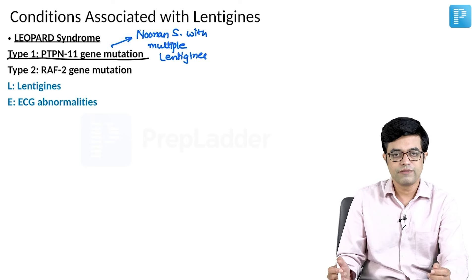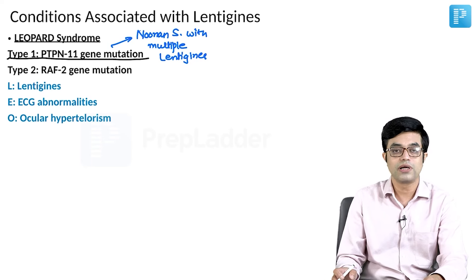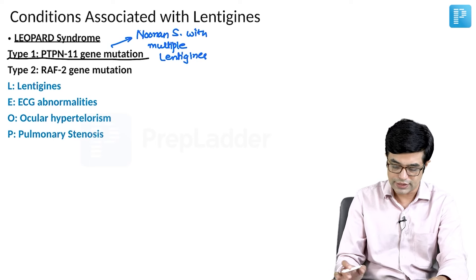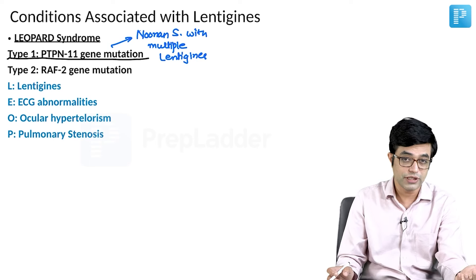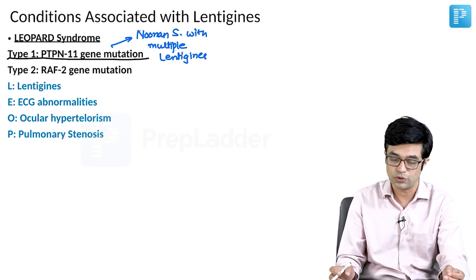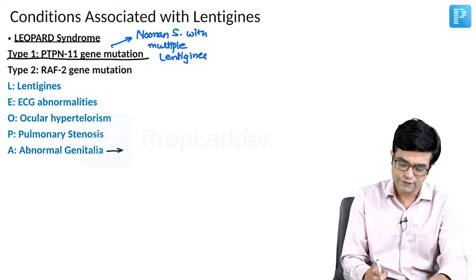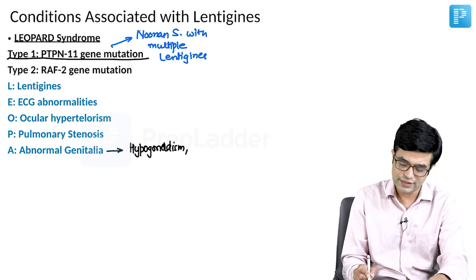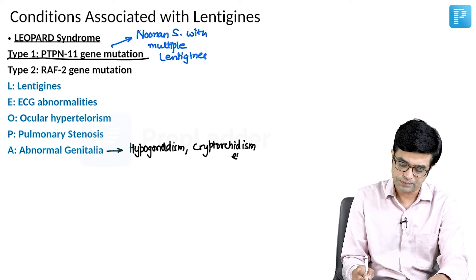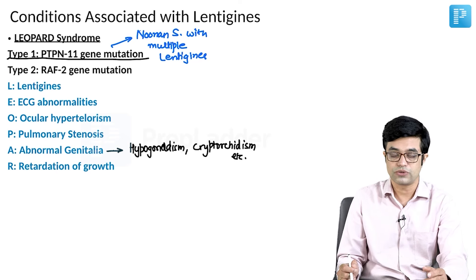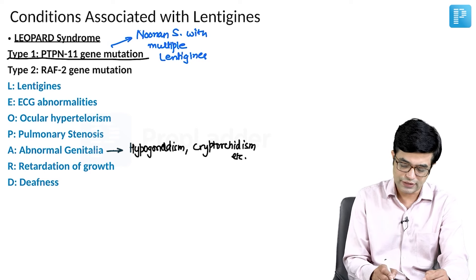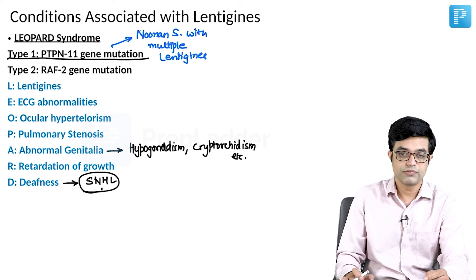LEOPARD is an acronym: L stands for lentigines; E stands for various ECG abnormalities; O stands for ocular hypertelorism — increased gap between the medial canthi of the two eyes; P stands for pulmonary stenosis, which is the most common congenital heart disease in Noonan syndrome; A stands for abnormal genitalia, including hypogonadism and cryptorchidism; R stands for retardation of growth, so short stature can be seen; and D stands for deafness — the type of deafness is sensorineural hearing loss.